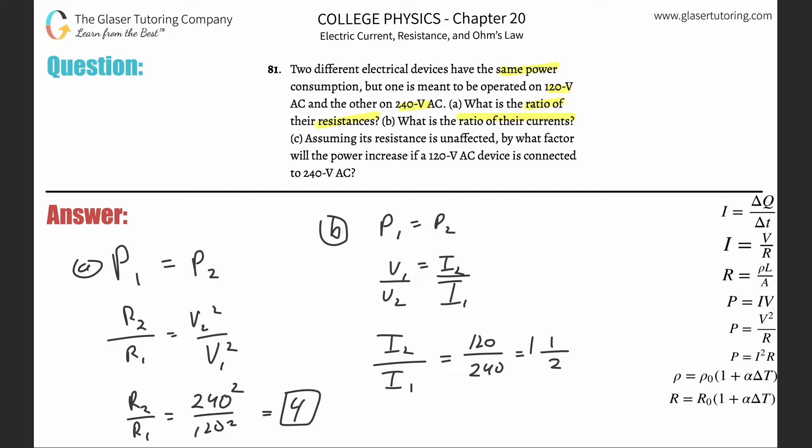Letter C: Assuming its resistance is unaffected, by what factor will the power increase if 120 volts is connected to 240? In this particular case, they're saying resistance is unaffected. In other words, R1 must equal R2.